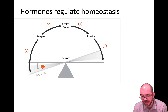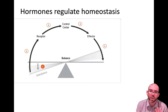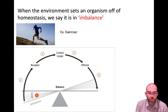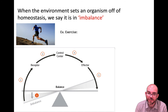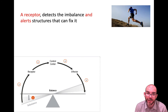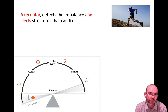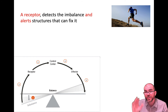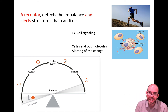Hormones are often used to regulate homeostasis, so I want to walk you through an example of how all these pieces can fit together. Let's start with being off balance — homeostasis means we want to maintain stable internal conditions, but sometimes you can get too hot or too cold. In this example, let's look at exercise. When you're exercising, your body is off balance because it is needing more energy than it normally requires. There are going to be cells that act as a receptor to signal to the rest of the body that something's off and we need to return to balance.